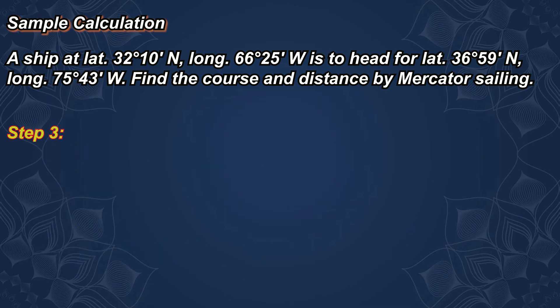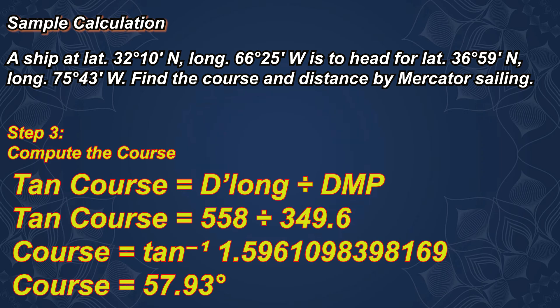Step 3: Compute the course. Tangent of course equals difference of longitude divided by difference of meridional parts. 558 divided by 349.6 equals a course of 57.93 degrees.